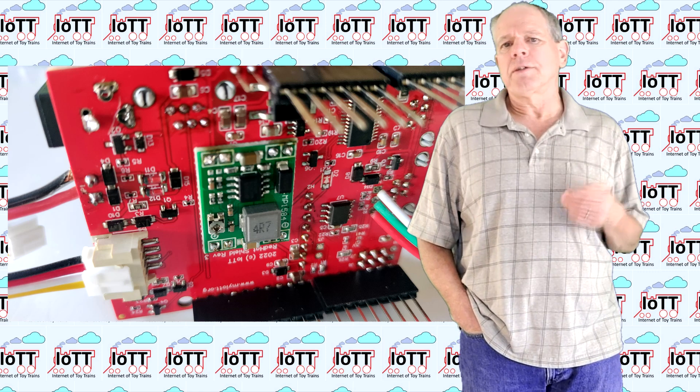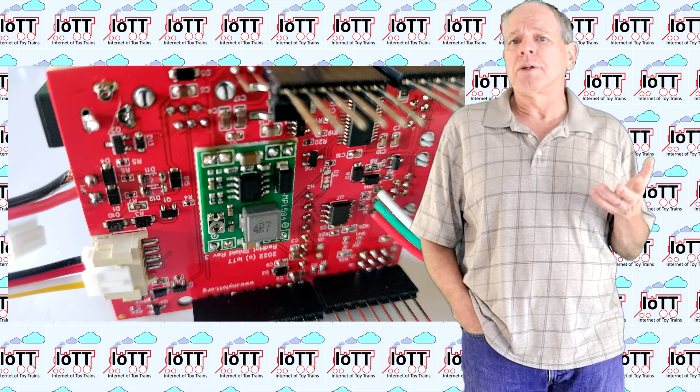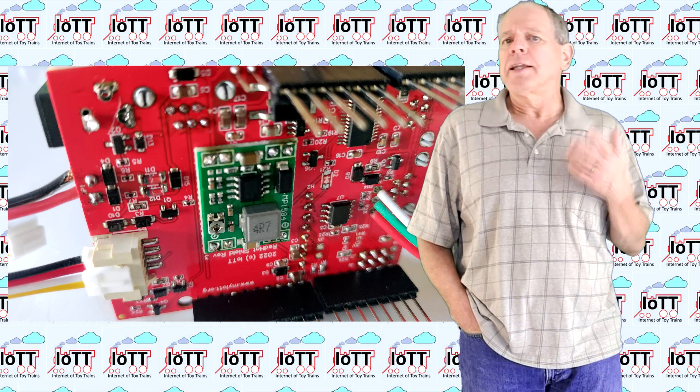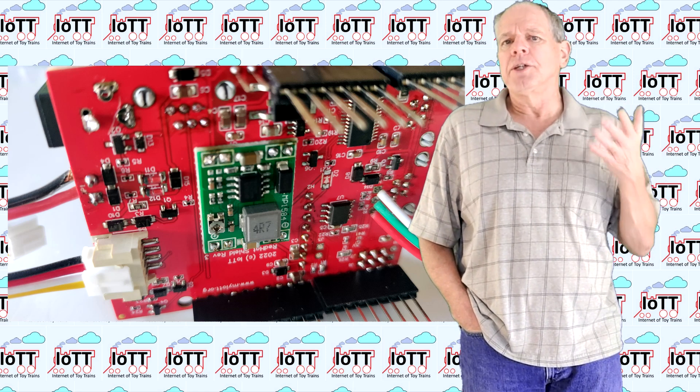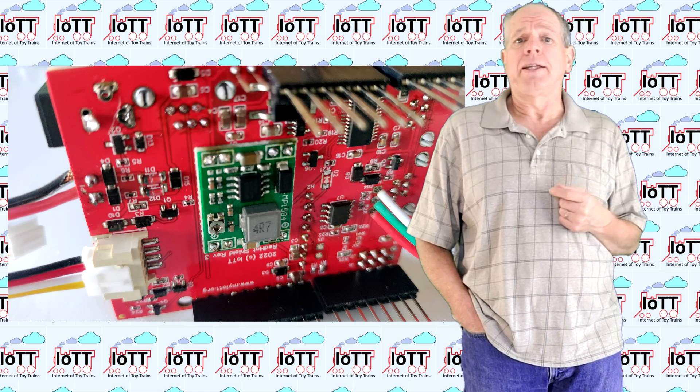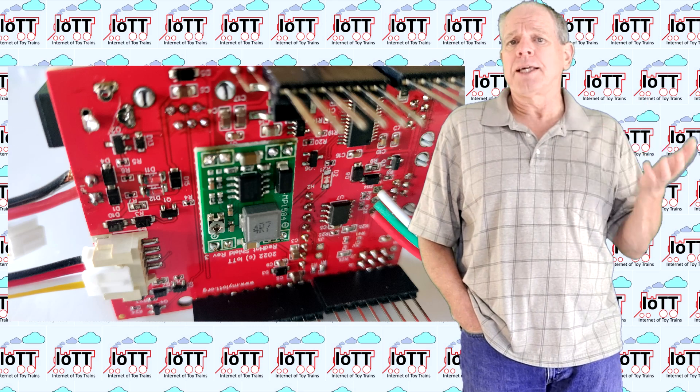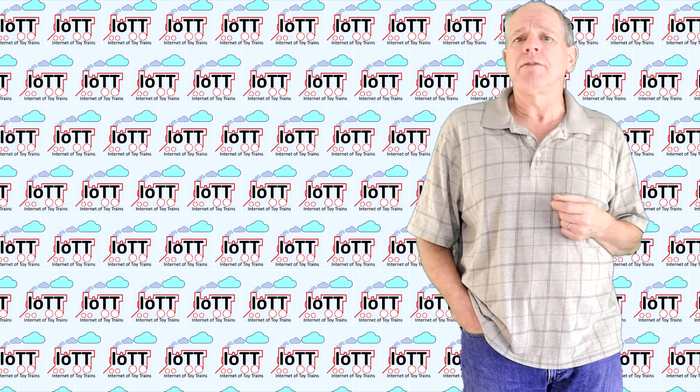This second converter was of the same type as the one used on the Red Hat. So the good news here was that the problem was only with the new DC-DC converter but not with the Red Hat. So I removed the additional converter from the test system and started the investigation.